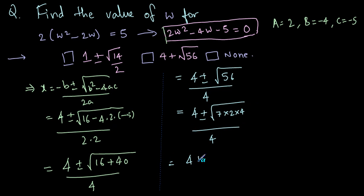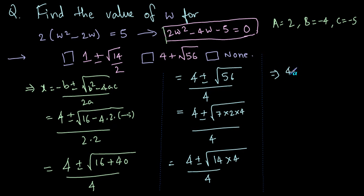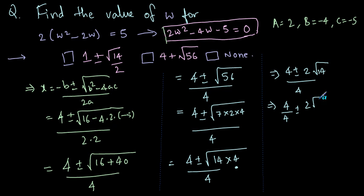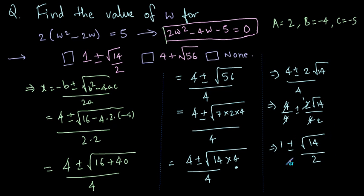So 56 equals 7 times 2 times 4. Taking the square root, we extract the 4 out, giving 2 root 14. So the expression becomes 4 plus or minus 2 root 14, divided by 4. Dividing both terms by 4 gives 1 plus or minus root 14 divided by 2. So the answer is 1 plus or minus the square root of 14, all divided by 2.